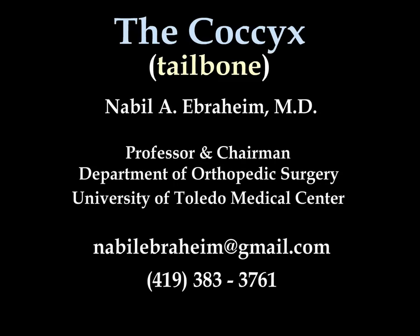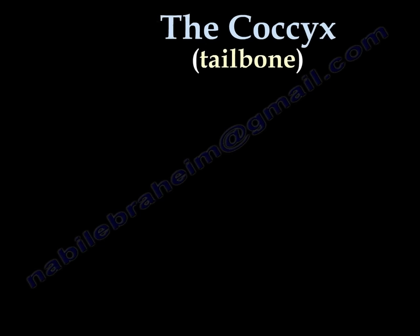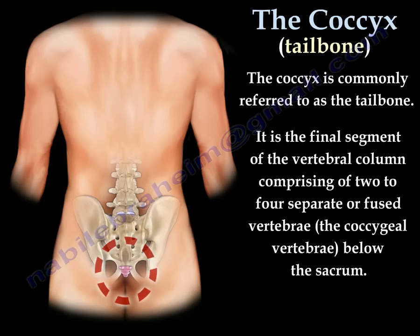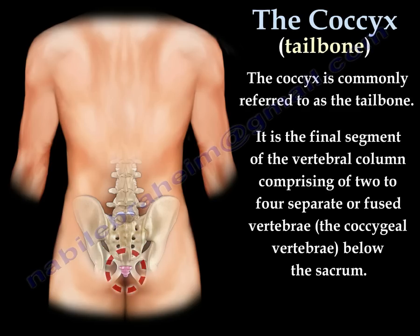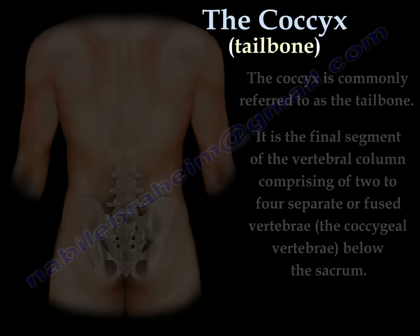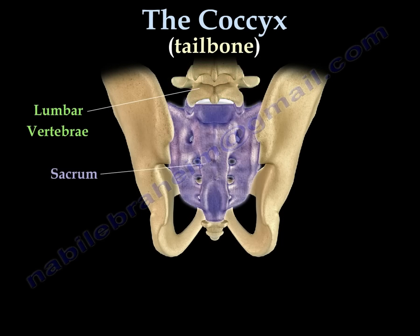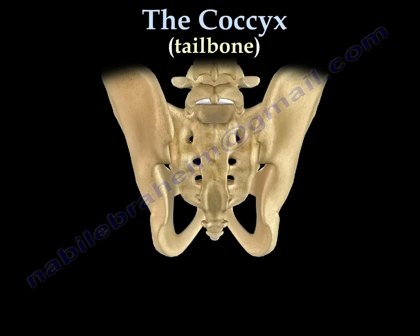This video is about the coccyx, which we call the tailbone. The coccyx is at the lower end of the spine, below the sacrum. The lower back is called the lumbar vertebrae, followed by the sacrum, and then the coccyx — the tailbone.